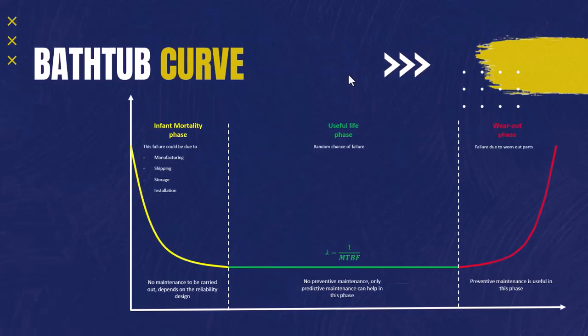Now let's look at the bathtub curve, as it is the only pattern that has three different phases in an asset's life: infant mortality, useful life, and wear out. The infant mortality phase is the only phase where the hazard decreases over time, happening in the initial phase. This occurs due to manufacturing issues, defective parts, installation issues, or even operational issues because the operator is still not used to the new asset. As time goes on, the failure hazard decreases until reaching the useful life phase.